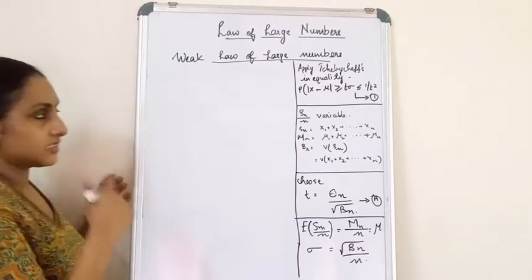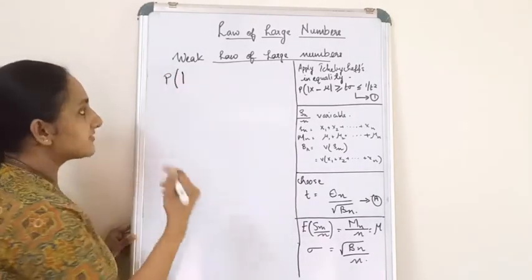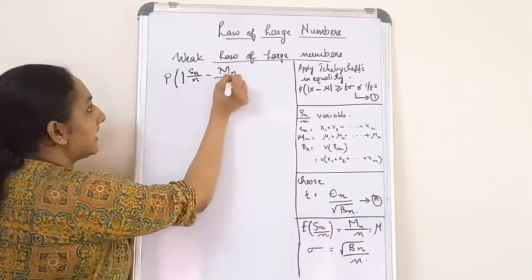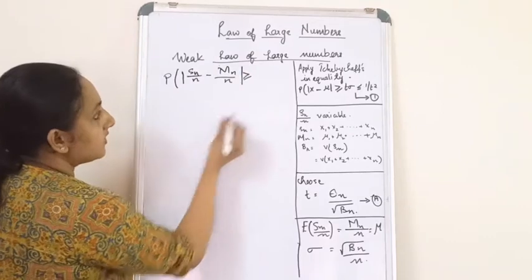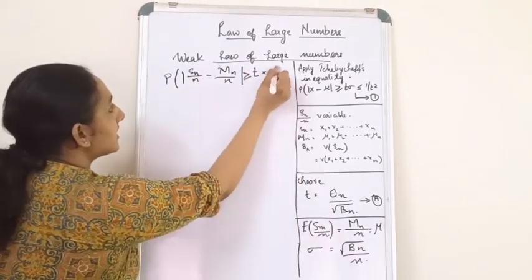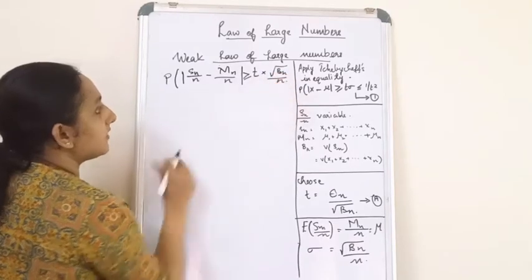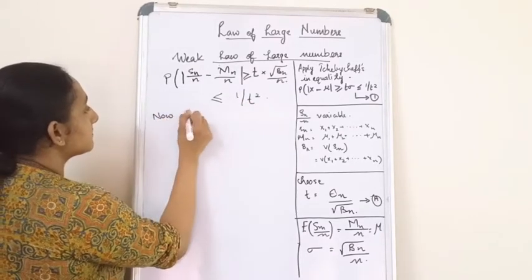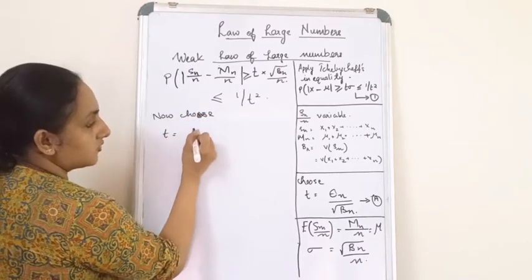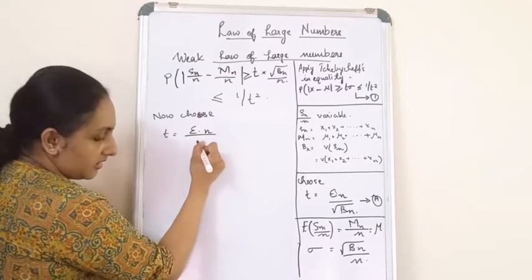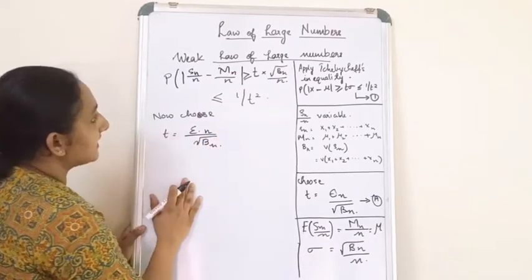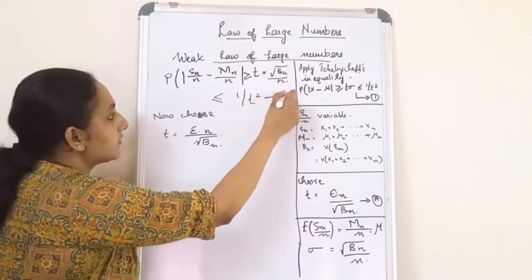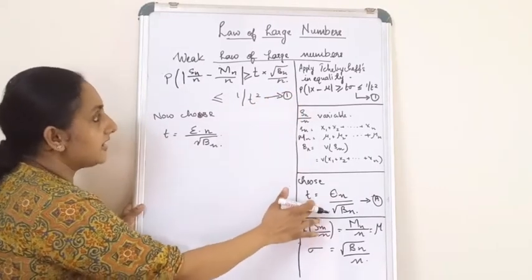Applying Chebyshev's inequality, we get: the probability that |Sn/n - mn/n| >= t*sigma, where sigma equals the square root of Bn/n, is less than or equal to 1/t-squared. Now we choose T equal to epsilon divided by the square root of Bn, and we mark this substitution as equation (a), which we will substitute into equation (1).